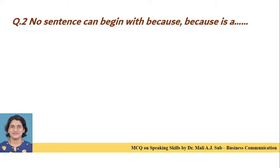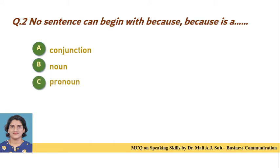Question 2: No sentence can begin with 'because'. Because is a — Option A: conjunction. Option B: noun. Option C: pronoun. Option D: adverb. Correct answer is Option A — no sentence can begin with 'because'; because is a conjunction.